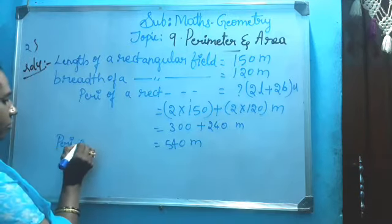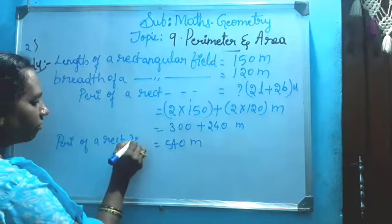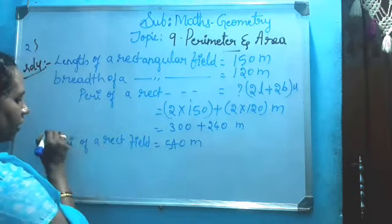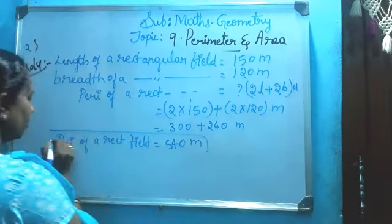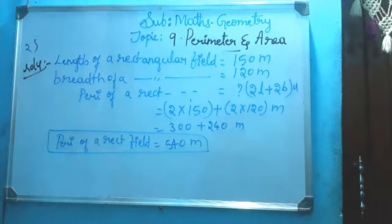Total: 0 plus 0 equals 0, 0 plus 4 equals 4, 3 plus 2 equals 5. What is the answer? Perimeter of a rectangular field is equal to 540 meters.